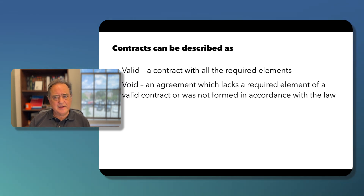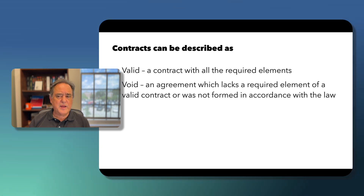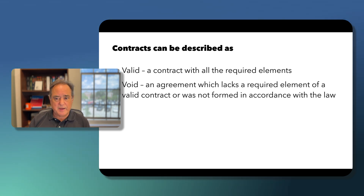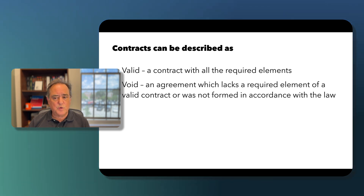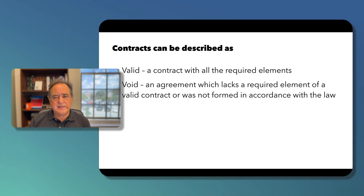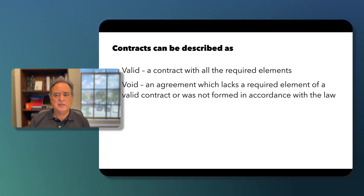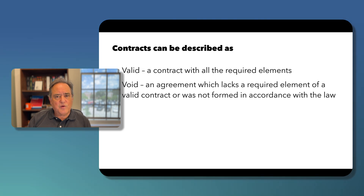A void contract is an agreement which lacks a required element of a valid contract — perhaps there was no assent, no consideration, or it was not formed in accordance with the law. For example, a contract to burn down a house is illegal and therefore void.